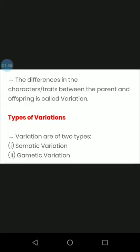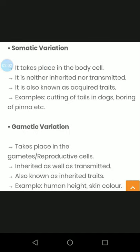Variation is of two types: somatic variation and gametic variation. Somatic variation takes place in the body cell. It is neither inherited nor transmitted. It is also known as acquired trait.